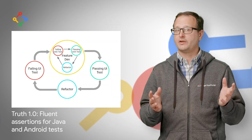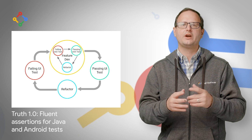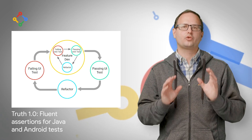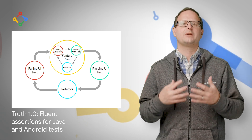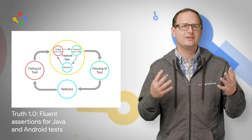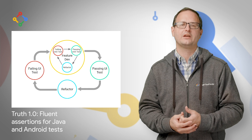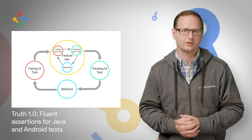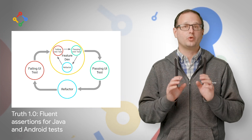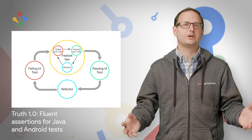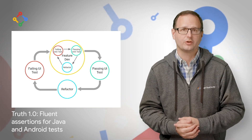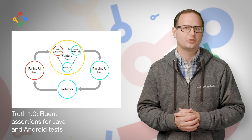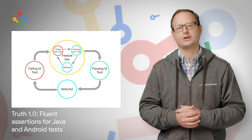If you're developing for Android, try AndroidX Test. It includes Truth extensions that make assertions even easier to write and failure messages even clearer. For more details, including comparisons of different libraries, check out the Google Open Source blog post linked below.